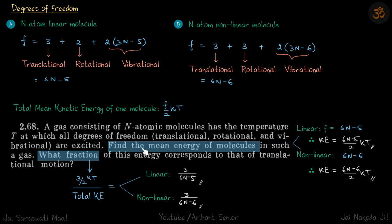Problem 1: Find the mean energy of a molecule if all degrees of freedom are excited, and what fraction of this energy corresponds to translational motion. For a linear molecule, f = (6n - 5), so total kinetic energy is (6n - 5) * kT/2. For a non-linear molecule, kinetic energy is (6n - 6) * kT/2.